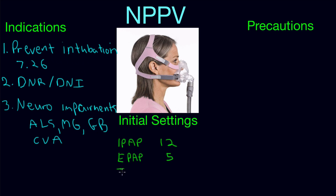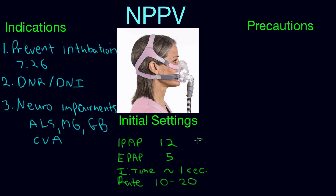You also have to select an I-time, and one second is generally a good starting point, but keep in mind you can use 0.8 seconds or even 1.2 seconds — it's not an absolute. You're also going to have to choose a rate, and we'll stick to the same range used for mechanical ventilation: between 10 and 20 breaths per minute. Finally, you're going to have to pick an FIO2, and generally between 30 and 60 percent is acceptable as a general guideline — that's not absolute criteria.